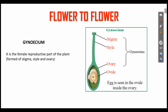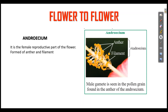The Gynosium is the female part. Then next is Androecium. Androecium is the male reproductive part of the flower. It consists of filaments. The male gamete is seen in the pollen grain, which is found in the Androecium.